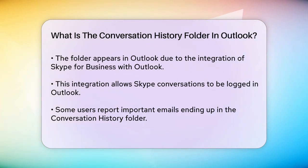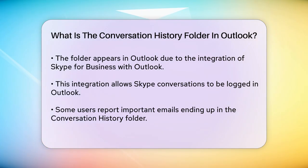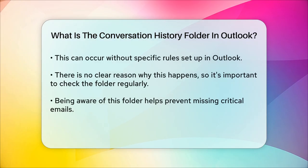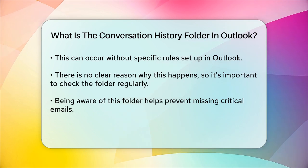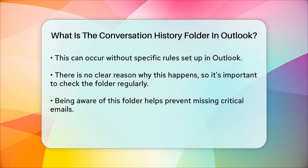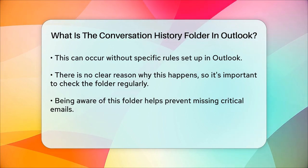However, some users have reported that important emails from trusted senders sometimes end up in the Conversation History folder instead of their inbox. This can happen even if there are no specific rules or sweeps set up in Outlook. It seems there's no clear pattern to why this happens, but it's essential to check this folder periodically to ensure you don't miss any critical emails.